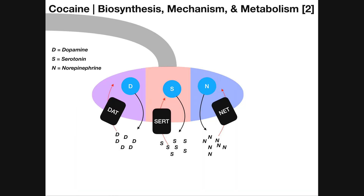How does cocaine work? In order to understand that, we need a little basic physiology. Here's a neuron — technically three neurons, because each releases a different type of neurotransmitter. Here's the axon, here's the terminal end-bulb, and given an action potential, the neuron can release neurotransmitters into the synapse. Some neurons will release dopamine into the synapse, some will release serotonin, and others will release norepinephrine.